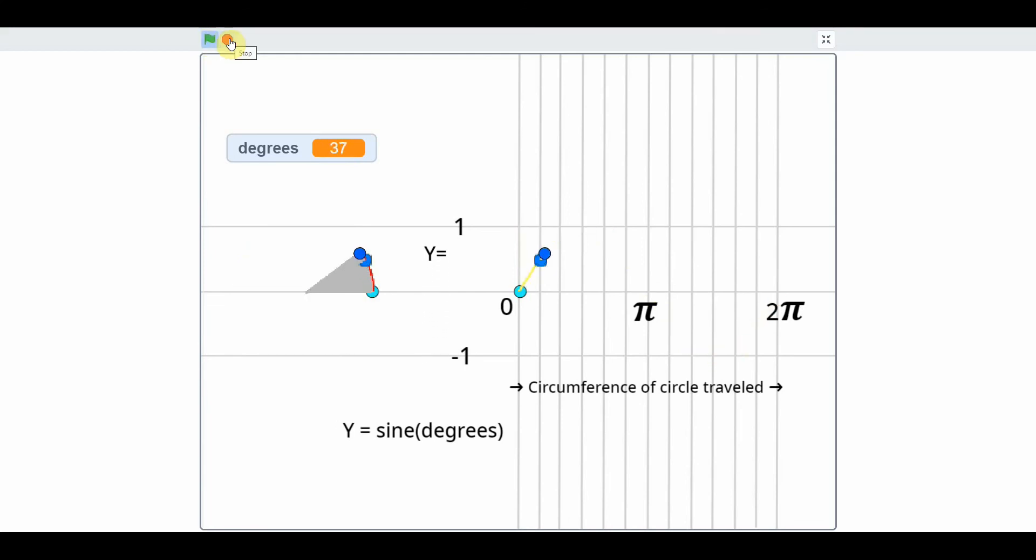So here I was going up to 90 degrees. Here I'm trying to stop it at 90. I overshot it, it's 95. Now let's try 180. 180 degrees. 270 degrees approximately. And all the way to 360 degrees, which is the same as zero. And for each of those degrees you get a value for Y.